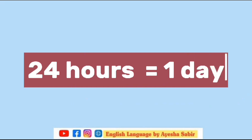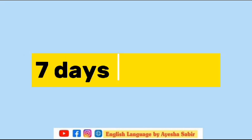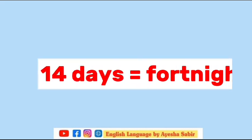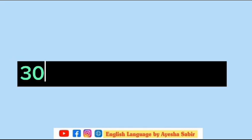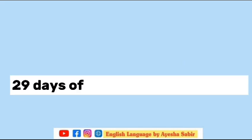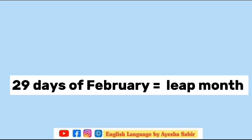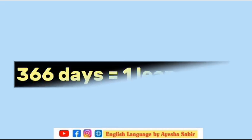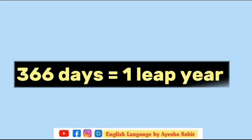24 hours equal to one day. Seven days equal to one week. 14 days equal to one fortnight. 30 or 31 days equal to one month. 29 days of February equal to leap month. 365 days equal to one year. 366 days equal to one leap year.